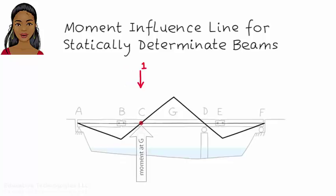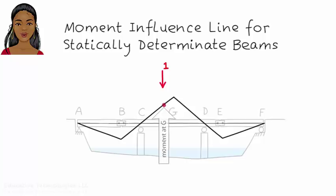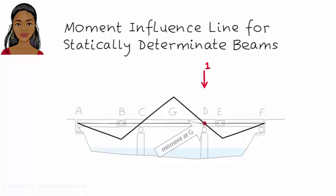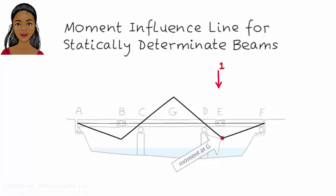Moment at G reaches its maximum positive value when the unit load is at G. Then the moment decreases in value as the load moves toward D. When the load reaches D, moment at G reaches zero. Moment at G continues to decrease as the unit load moves toward E. When the load is at E, moment at G reaches a large negative value. Then the moment values start moving toward zero as the unit load moves toward point F, and when the unit load reaches F, moment at G becomes zero again.